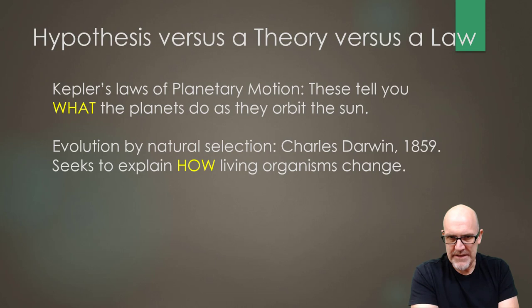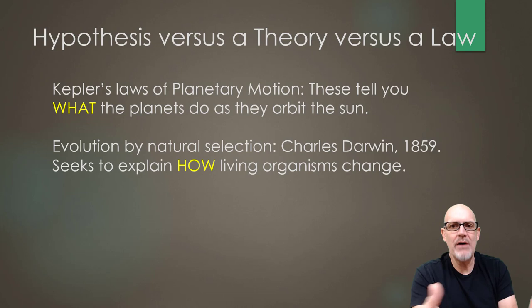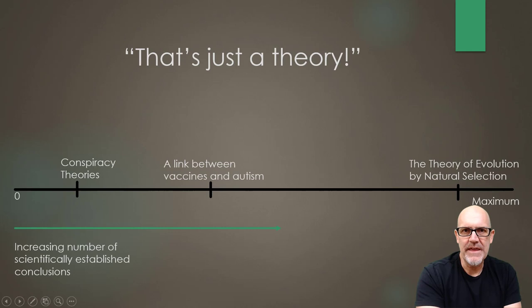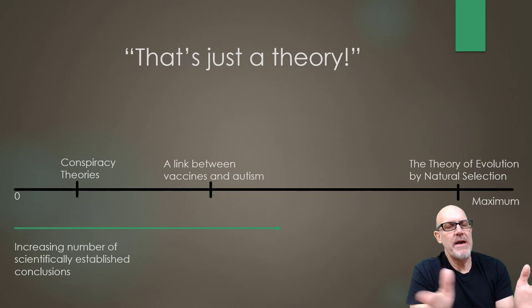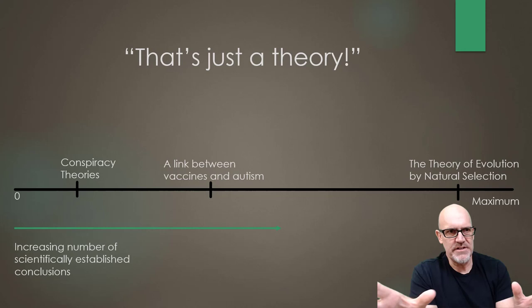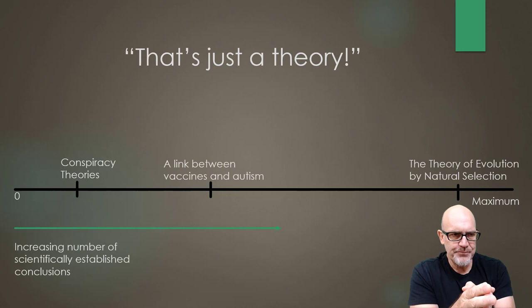An example of a theory would be evolution by natural selection. It's a theory which Charles Darwin formulated in 1859 and it seeks to explain how living organisms change. Now that we know what a law is and what a theory is, I want to address something. Sometimes, especially in creationism, you'll hear someone say about evolution, 'well, that's just a theory.' We really need to talk about that. Laws and theories are both based on numerous hypotheses — numerous experiments and conclusions have gone into establishing them. We've got to be very careful when we say 'that's just a theory.'